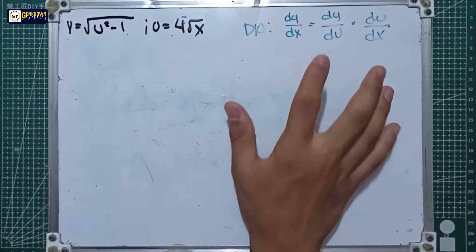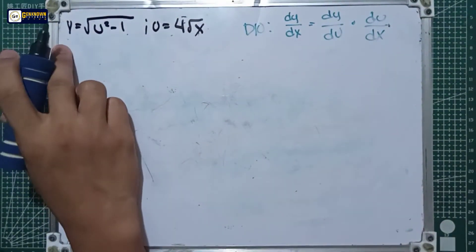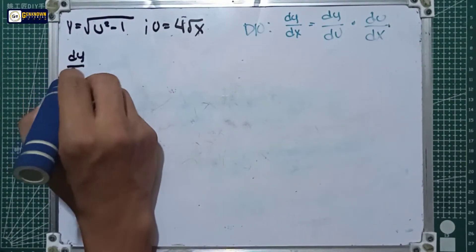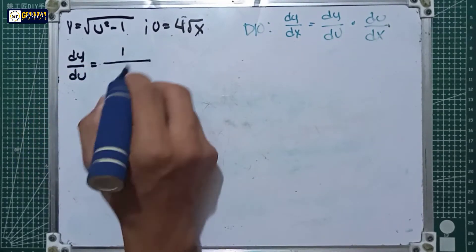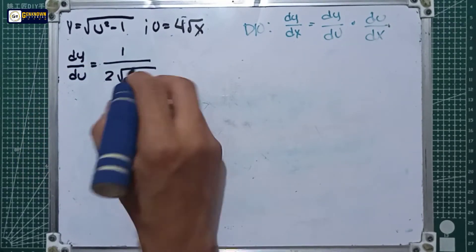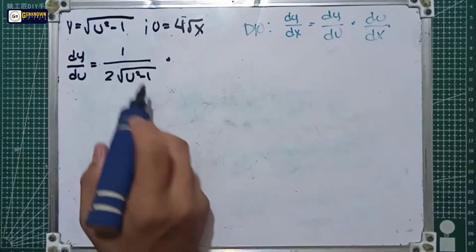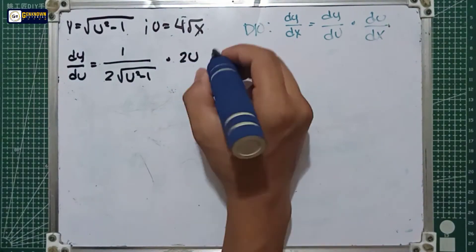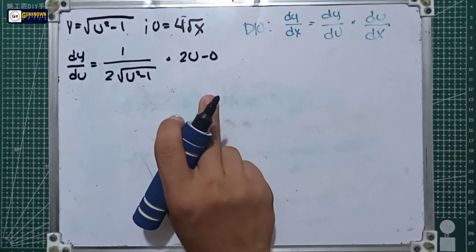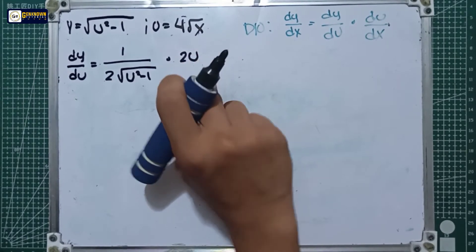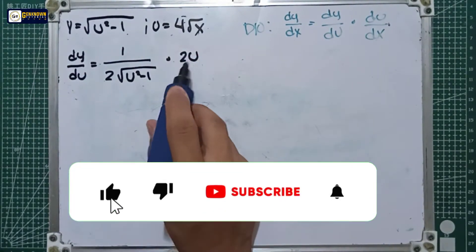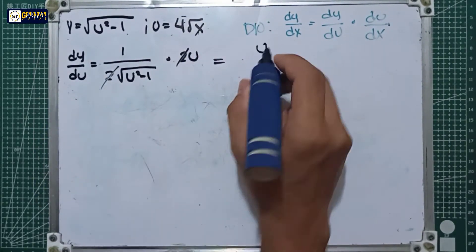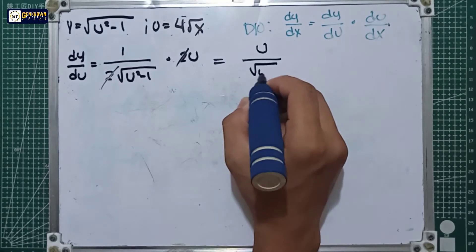We will use the chain rule formula again. For the y equation, we derive it with respect to u. So dy over du is equal to 1 over 2 square root of u squared minus 1, multiplied by the derivative of u squared minus 1, which is 2u. We can cancel the 2s, so the final value of dy over du is equal to u all over the square root of u squared minus 1.